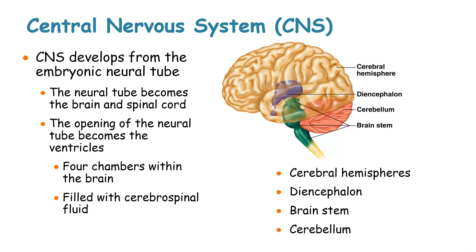The central nervous system develops from the embryonic neural tube, and this tube becomes the brain and the spinal cord. The opening of the neural tube becomes the ventricles, and the four chambers within the brain are filled with cerebrospinal fluid.